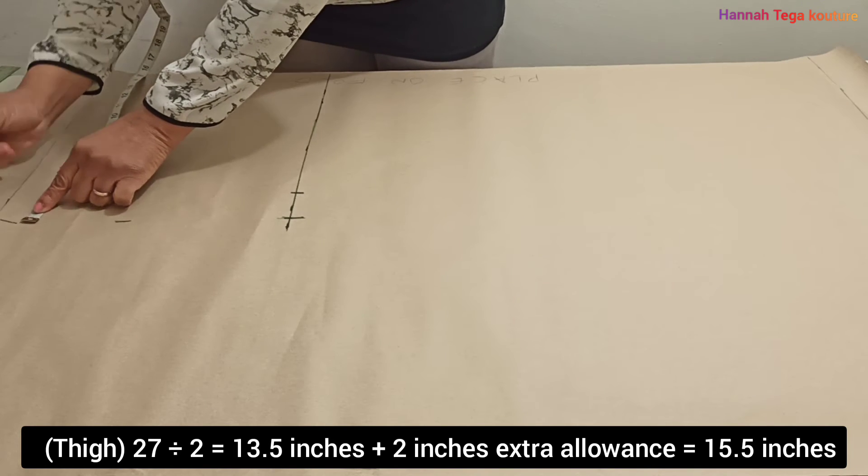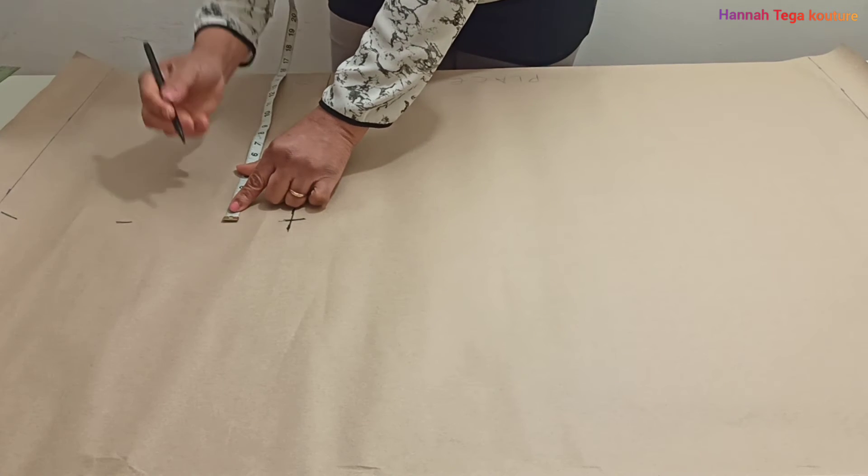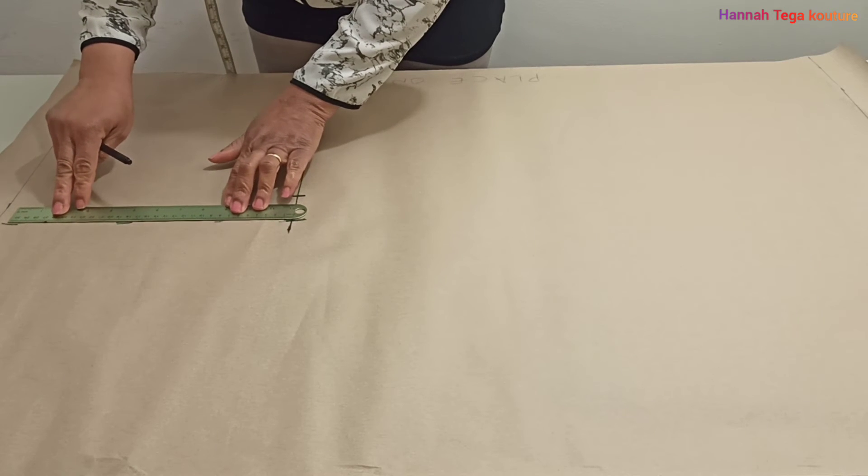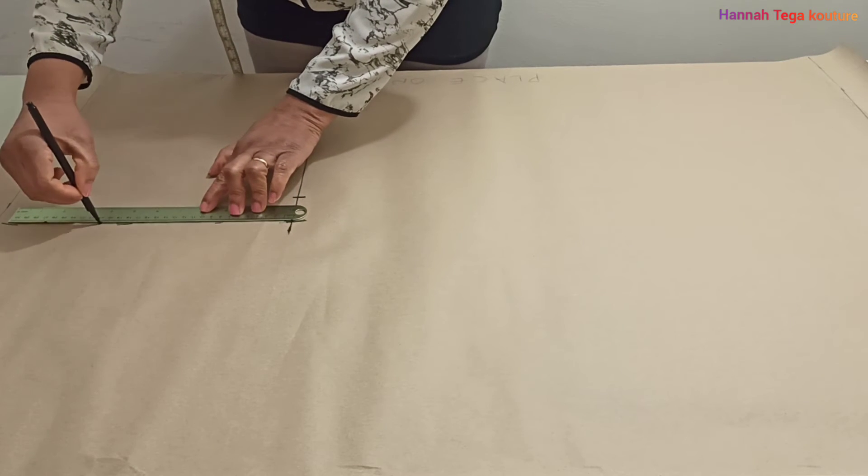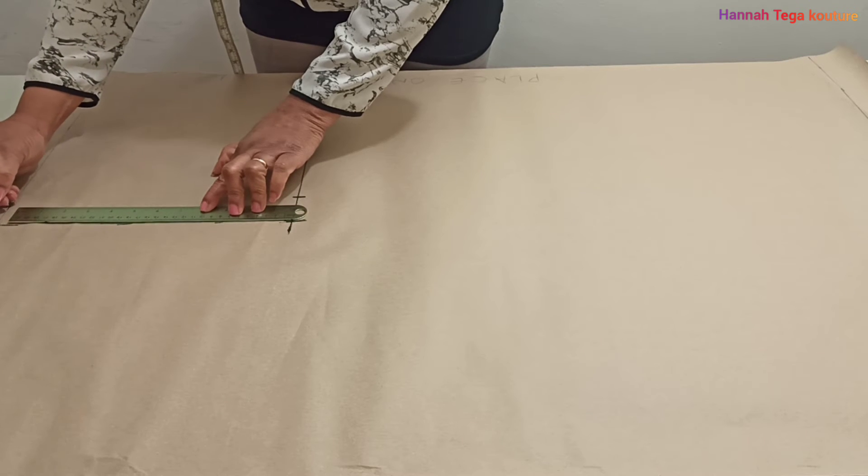So I'll make a marking all the way up to the waistband and that's my tie measurement, which is 15.5. If yours is different, you work according to what you've got. Once I do that, I'm going to rule a line right up to the waistband and my tie measurement is sorted.